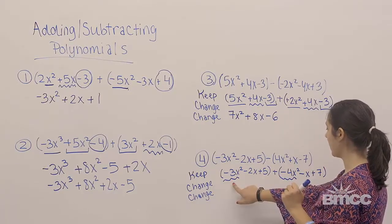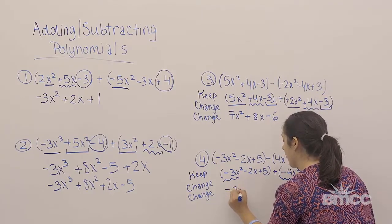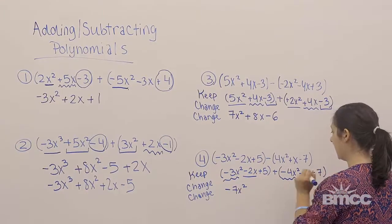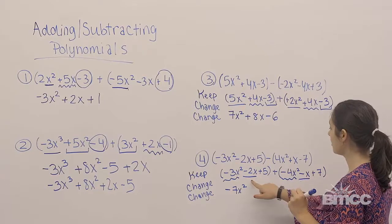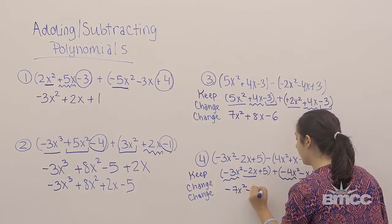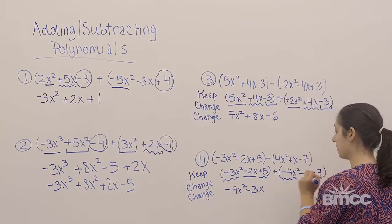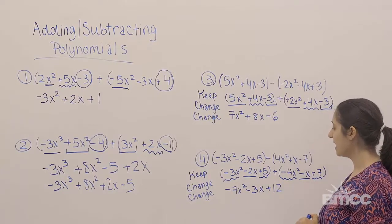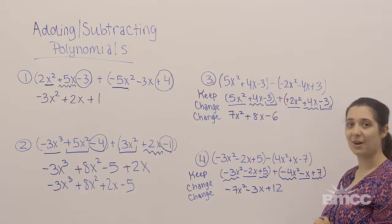Negative 3x squared plus negative 4x squared is negative 7x squared. Negative 2x and negative x are like terms, so negative 2x plus negative x is negative 3x. Positive 5 and positive 7 is positive 12. So my final answer is negative 7x squared minus 3x plus 12.